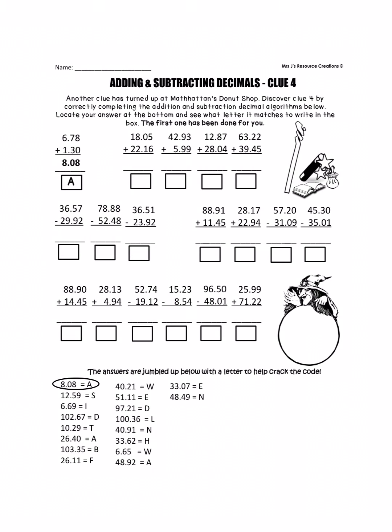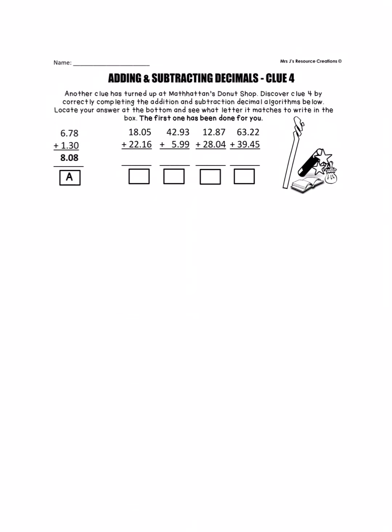Let's take a look at the directions first. Okay, so here we can see that we're told another clue has turned up at Manhattan's donut shop. Discover clue 4 by correctly completing the addition and subtraction decimal algorithms below. Locate your answer at the bottom and see what letter it matches to write in the box. The first one has been done for you.